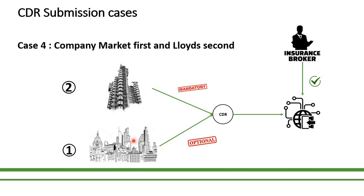Going to case number four: the company market is leading the slip and the Lloyd's syndicate is following. In this case, as you know from case number two, the CDR submission is optional for the company market participant. But as soon as the Lloyd's syndicate agrees to the return line, it is mandatory to submit the CDR to the digital gateway. An important point here is that the CDR will now include the company lines too, because they are already agreed. Our broker is again playing an extremely important role in orchestrating the CDR and making sure the submission process is complete.